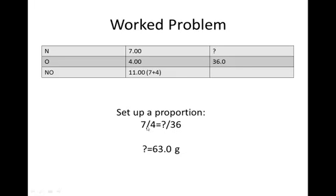So I'm going to set up a proportion again that 7 is to 4 as question mark is to 36. And then if I cross multiply and divide, I can find my question mark which would tell me there's 63 grams of nitrogen.